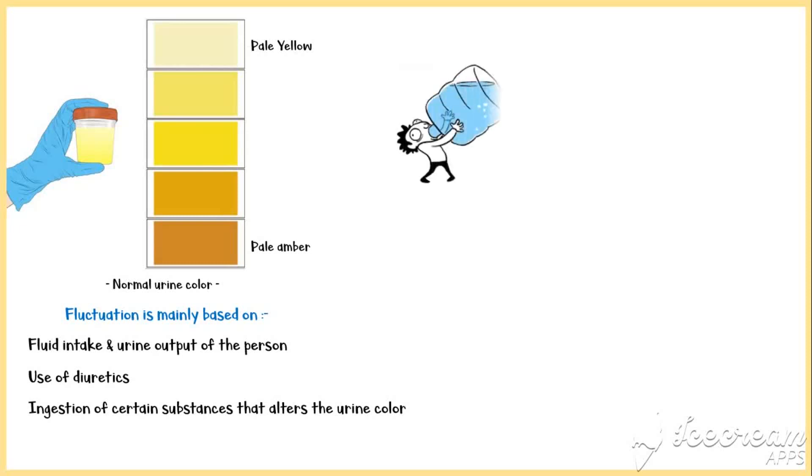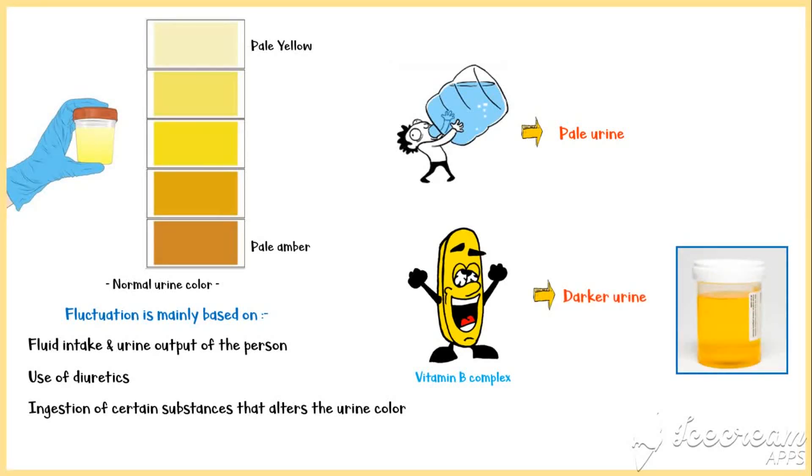For example, people who drink a lot of water tend to pass more pale urine, whereas people who take multivitamins such as vitamin B complex tend to pass darker urine, as you can see in this picture. Now let's see what are some abnormal colors of urine and their underlying causes.